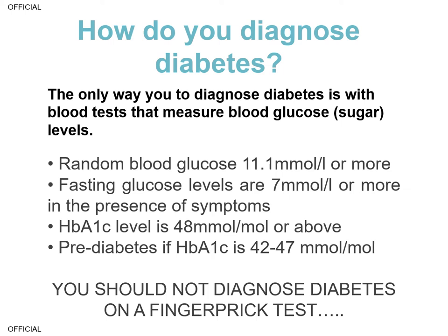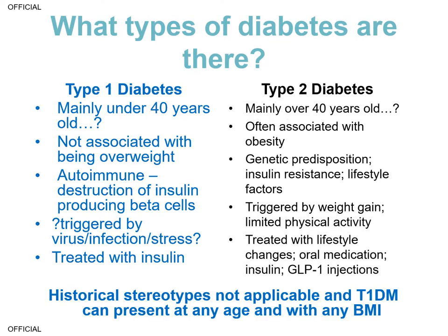It's important to emphasize that diabetes should not be diagnosed based on a finger prick test because of the potential accuracy issues — it should always be done with a laboratory sample. It's also worth noting that in the absence of symptoms, so somebody who's completely asymptomatic, then you should do two tests at different time points, and if both are abnormal then you would confirm the diagnosis.